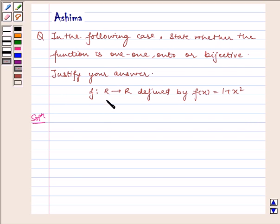We have function f from R to R defined by f(x) = 1 + x². Now let us write the solution. Given to us is function f: R to R defined by f(x) = 1 + x².